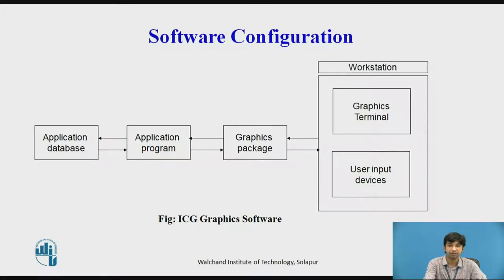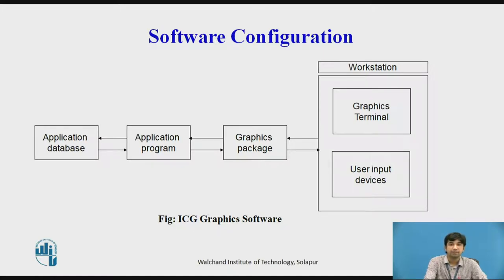Software configuration for CAD system. In working with graphics systems, there are various activities involved which are combined rather than sequential. The user constructs a physical model and inputs it to memory by developing it in the form of a drawing or image, which will be saved to the system. The interactive computer graphics mainly consists of graphic software and is divided into three modules.